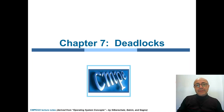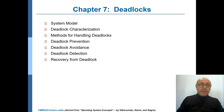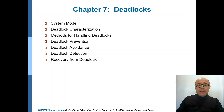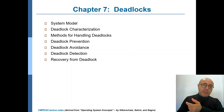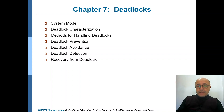We will now discuss deadlocks in detail. We will first describe the system model and then talk about how we can characterize the existence of a deadlock. That will be followed by a discussion of different mechanisms for handling deadlocks like prevention of deadlocks, deadlock avoidance, and deadlock detection, and finally we will talk about how we recover from a deadlock if any occurs.